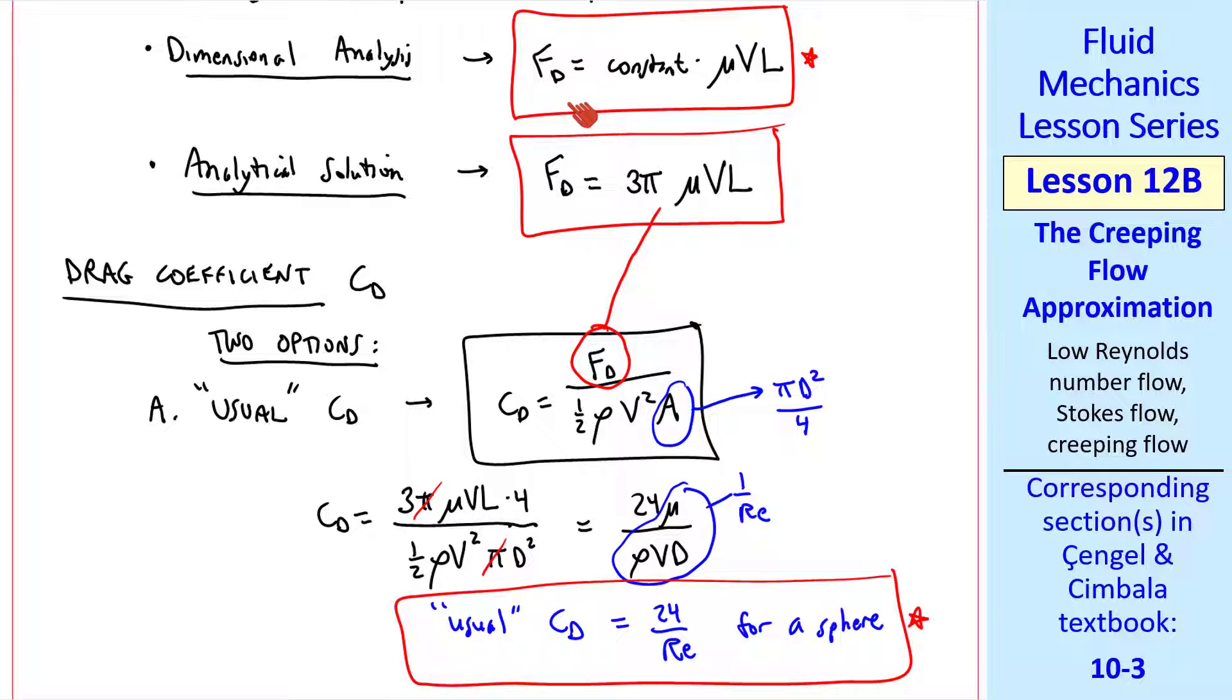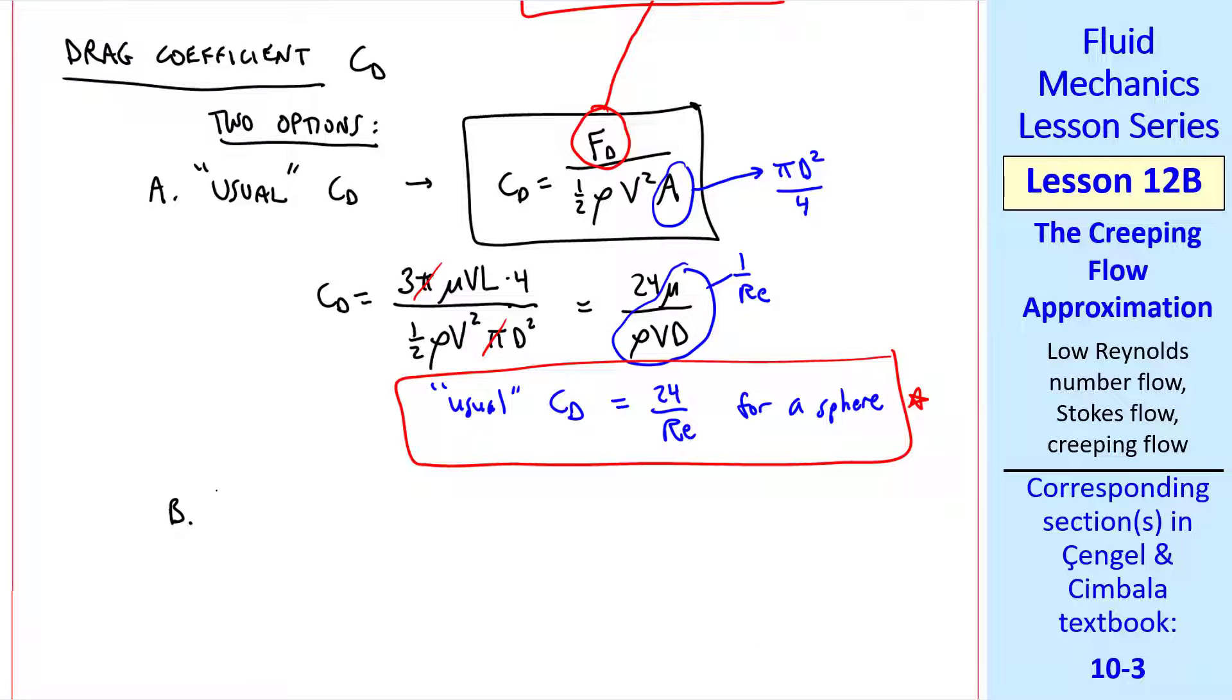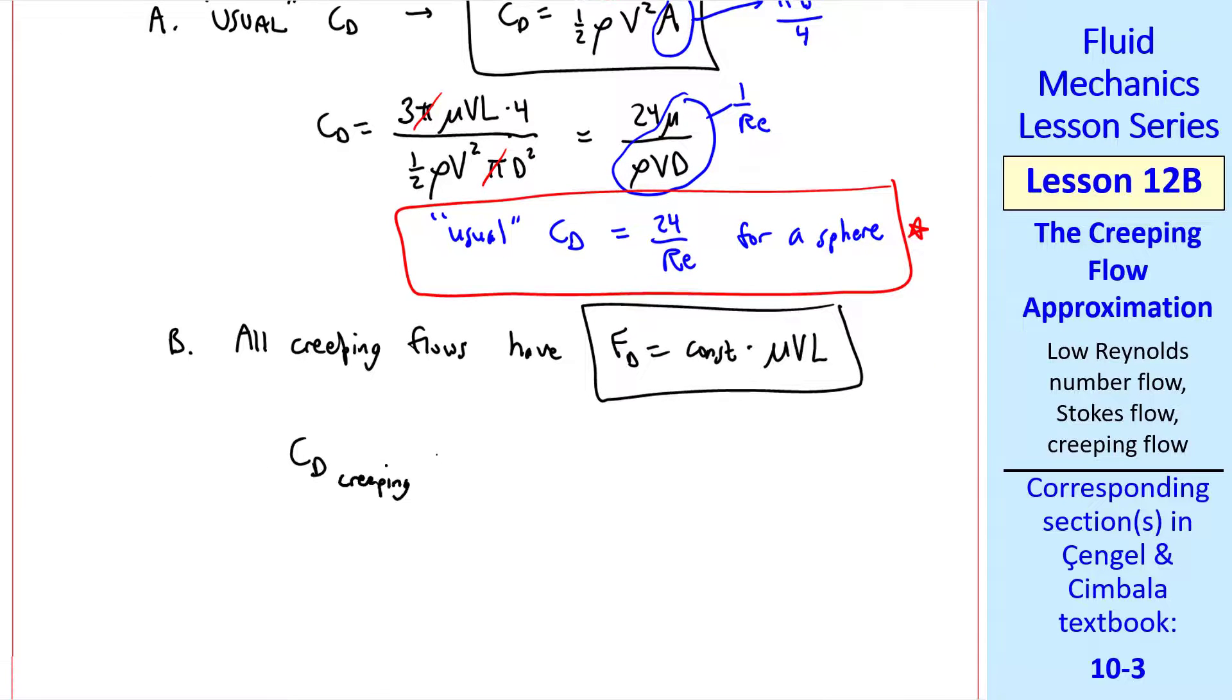The second option is to notice that FD is a constant times mu VL for flow over any object in creeping flow. So it seems obvious that we can use this constant as a type of drag coefficient. So the second option, since it turns out that all creeping flows have the same form, which we obtain from dimensional analysis, we define CD of creeping flow as the constant where CD is FD over mu VL.